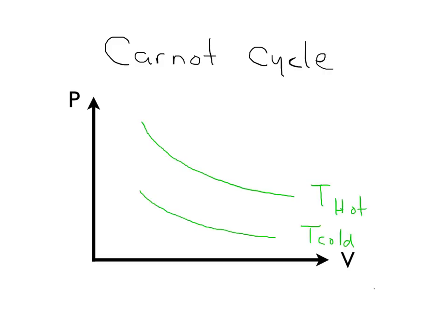So now let's set up the Carnot cycle. It looks like this. We start out at some initial pressure and some initial volume, right here. Then what we do is proceed from what I'm going to call Point 1 down along this isotherm to another point. We're going to increase volume while keeping a constant temperature, which means that the pressure is going to go down. Let's call this Part A of the cycle. This is an isothermal process, and we can calculate the work. This starting point is going to be P1 and V1.